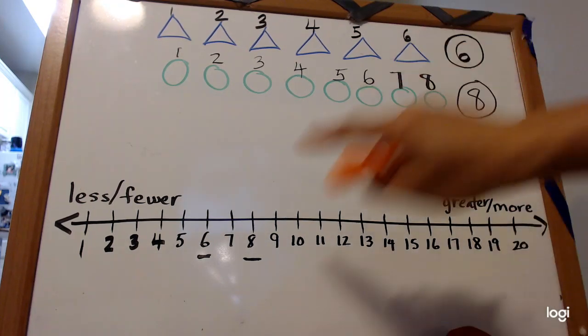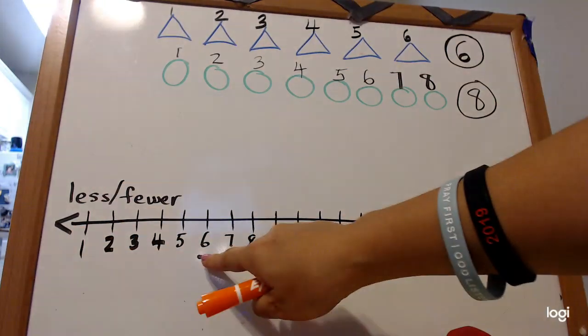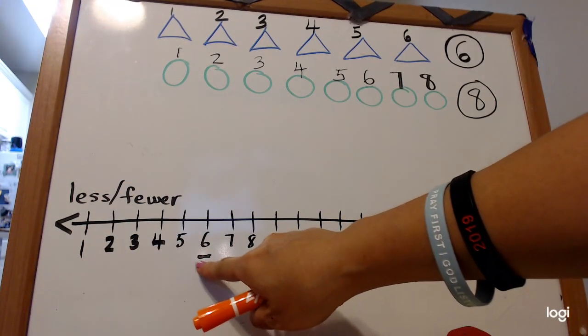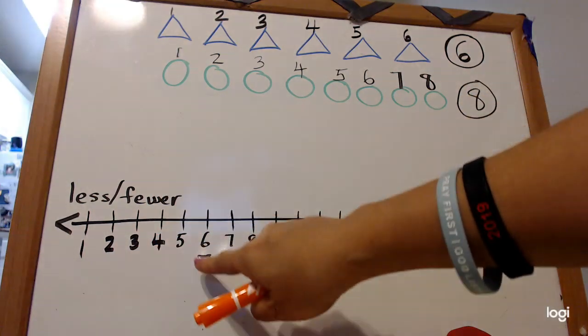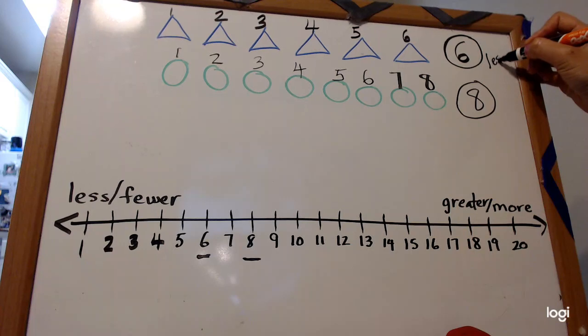So let's take a look at number six. Six is what than eight? Is six less than eight or greater than eight? Yes, it's less because it's on this side, right? So we put the word less next to six.